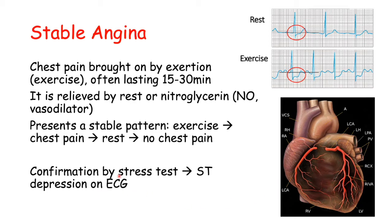Stable angina is confirmed by a stress test, where you try to induce angina in the patient by making them exercise to see if that is the cause of the chest pain. You will also see ST depression on an ECG. At rest the ECG appears normal, but upon exercise the ST segment — which normally follows a straight line — shows a marked depression.